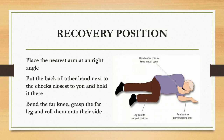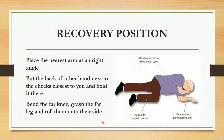Next one is recovery position. If the person is unconscious but breathing and has no other life-threatening condition, the individual can be placed in recovery position. First, place the nearest arm at a right angle. Then put the back of the other hand next to the cheek closest to you and hold it there. Finally, bend the far knee, grasp the far leg, and roll them onto their side.